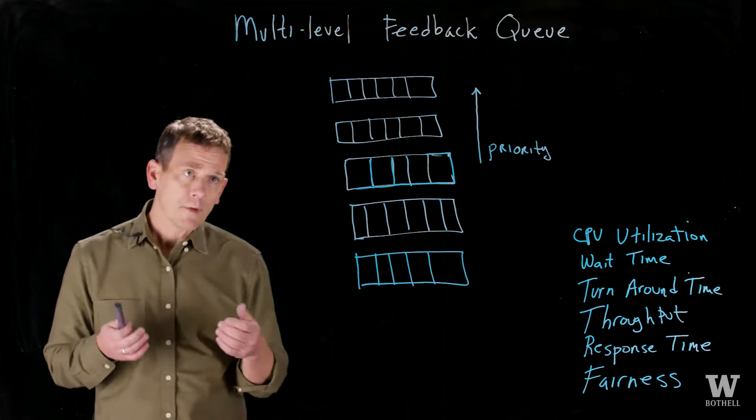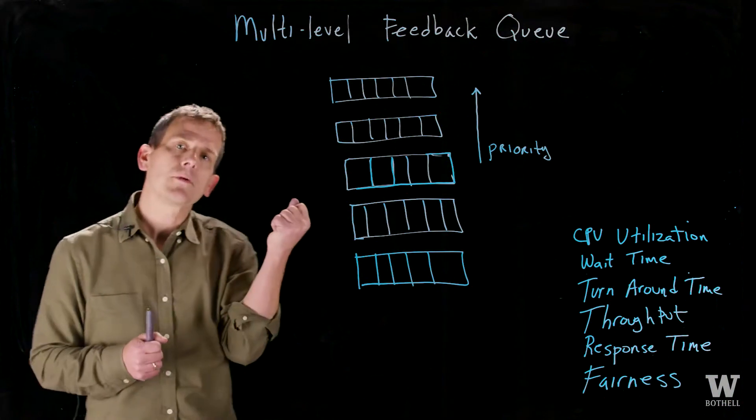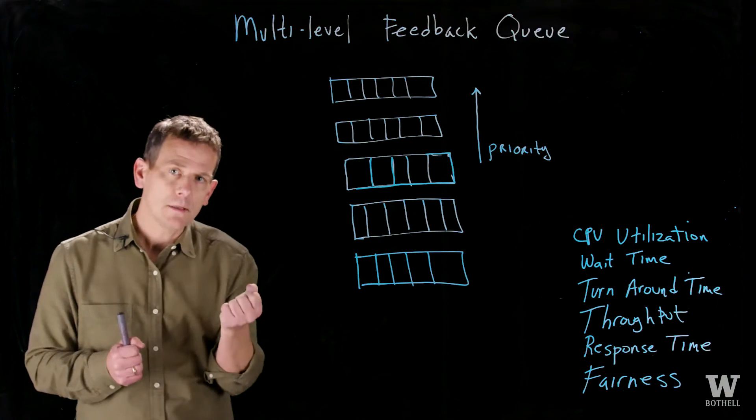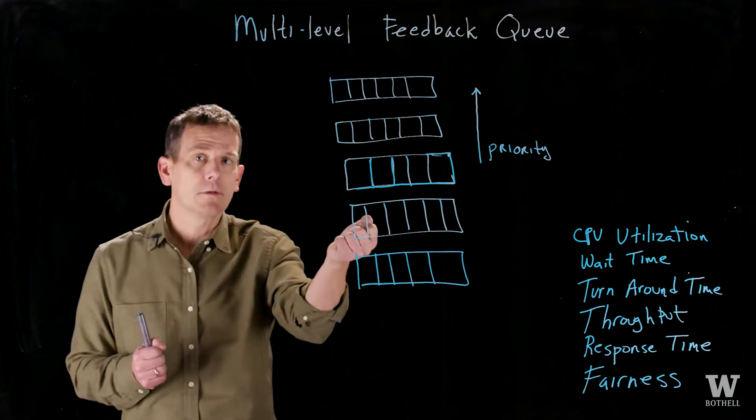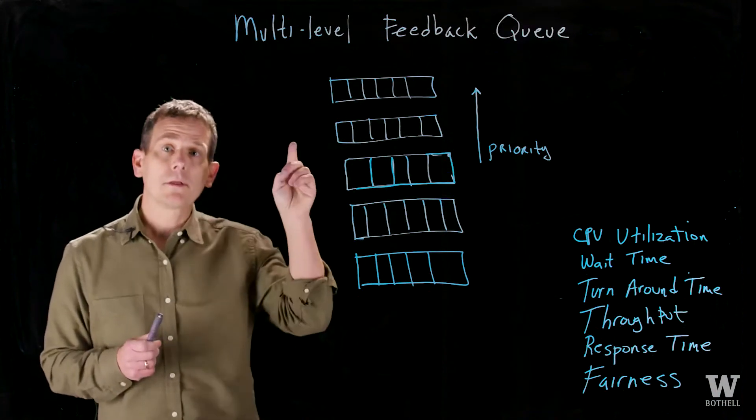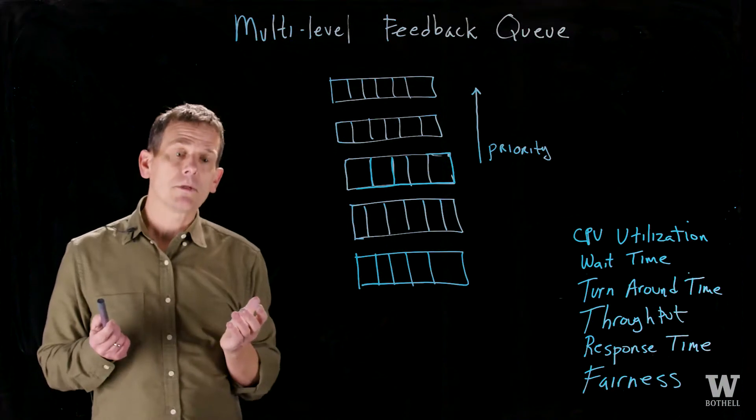The scheduler, when it runs, just goes to the highest level queue that has a job, pulls that job from the front of that queue, executes that job, and when that job finishes, it puts it back in one of the queues. It may put it back in a higher priority queue, or it may put it back in a lower priority queue, or it may go back in the same queue.